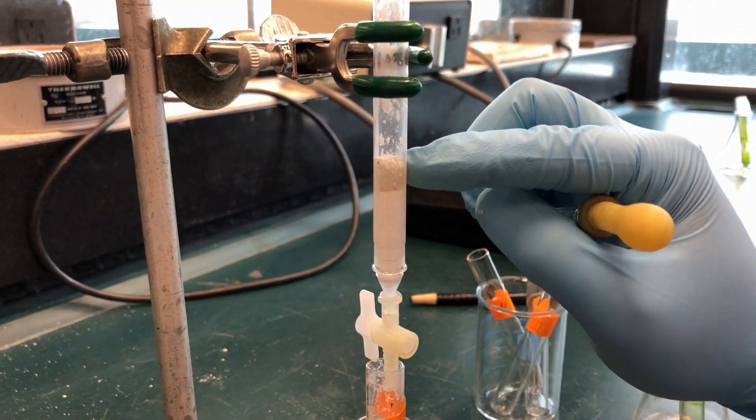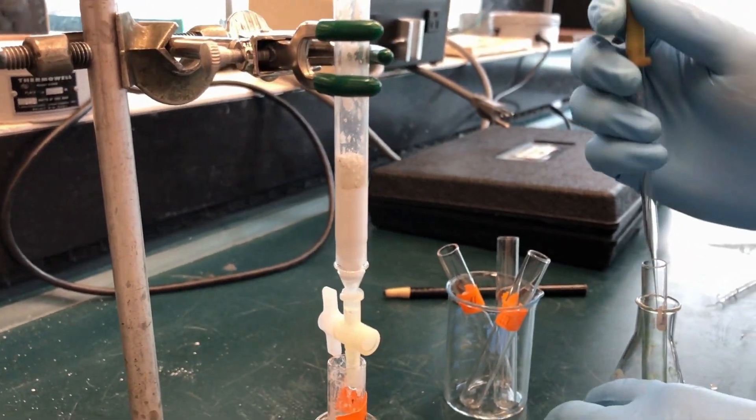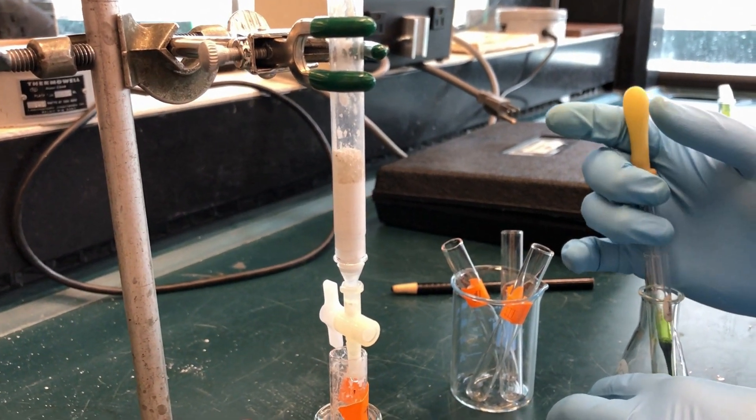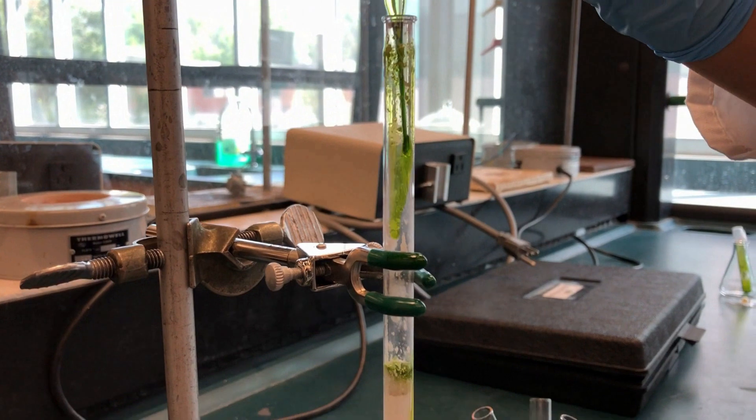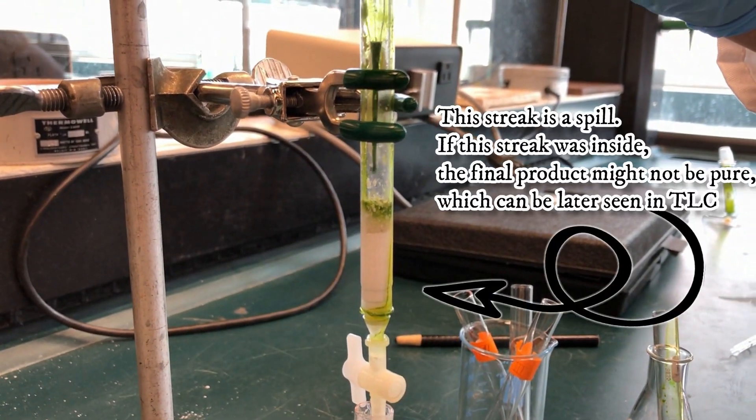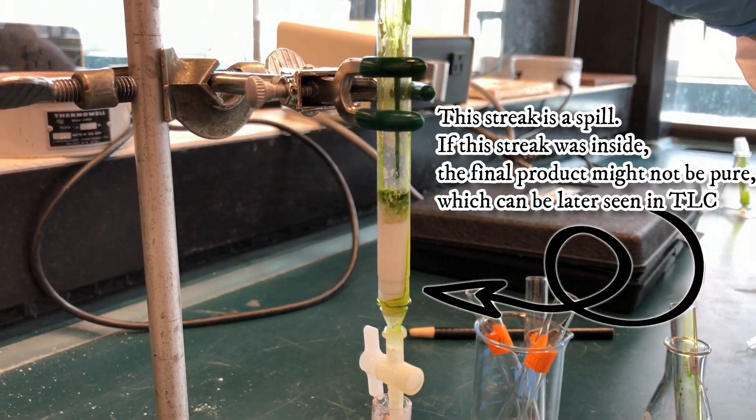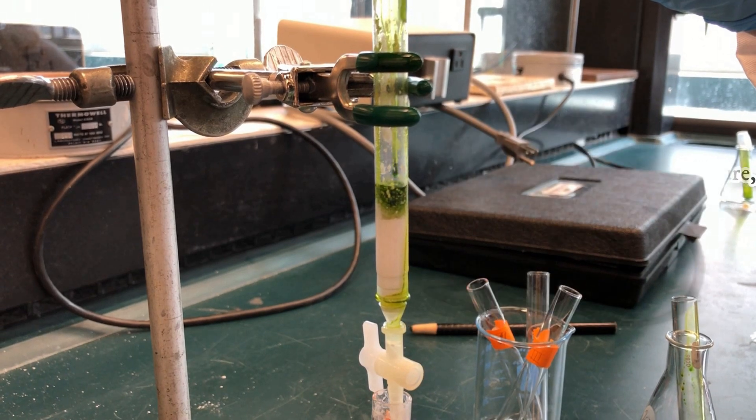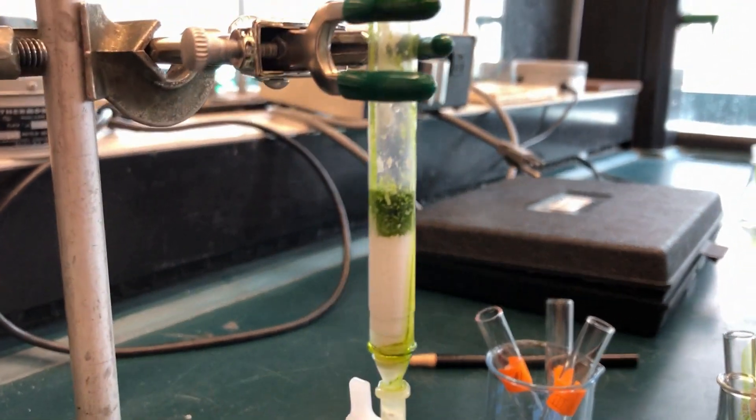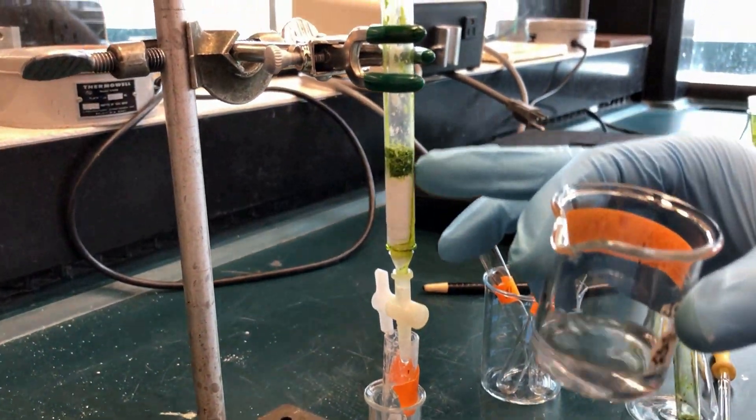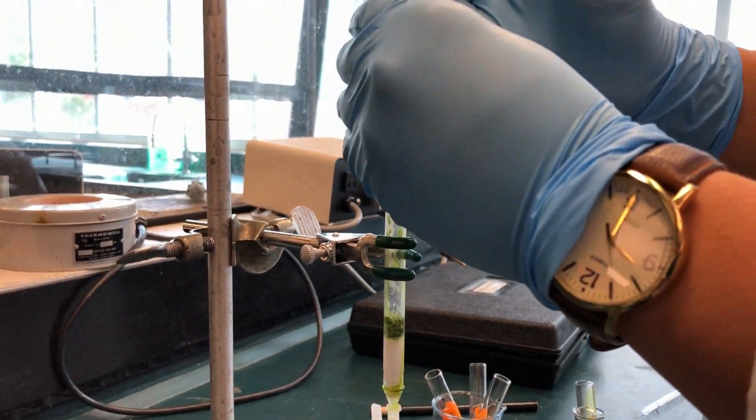Once the remaining petroleum ether is nearly absorbed into the sand, add half of the green pigment to the column. Make sure the column does not get dry. Once the green solution has seeped into the alumina, add more petroleum ether.